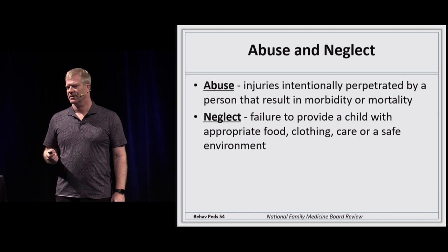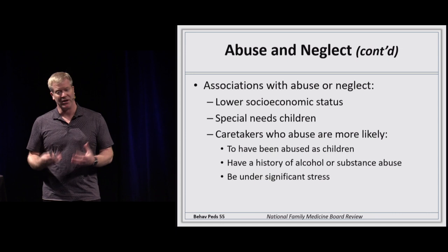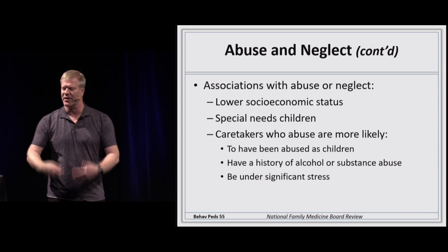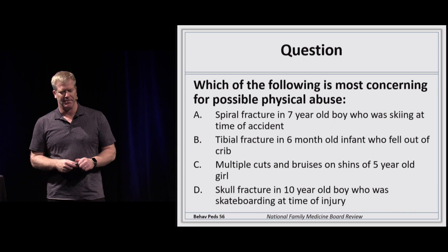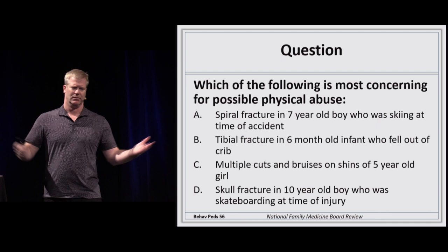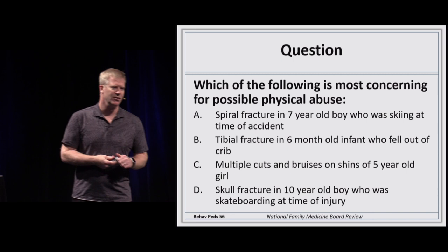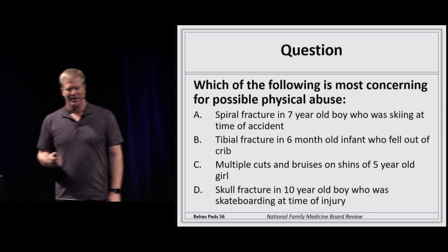In sexual abuse cases, the vast majority of perpetrators are relatives, family members, or acquaintances, and the victims are usually female. Red flags include age-inappropriate sexual behavior, recurrent UTIs in young girls, and associated mental health issues. Always ask: 'Do you feel safe at home?' Physical examination is often unremarkable. Screening for STIs is important, and rape kits have a 72-hour window. Referral to a specialized center is recommended.